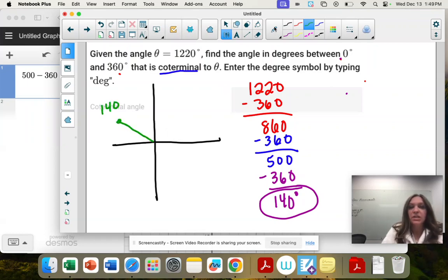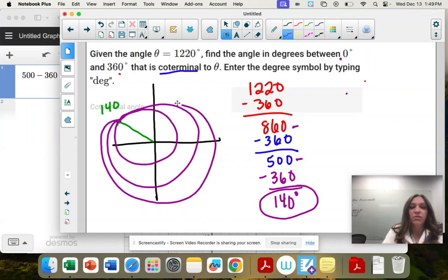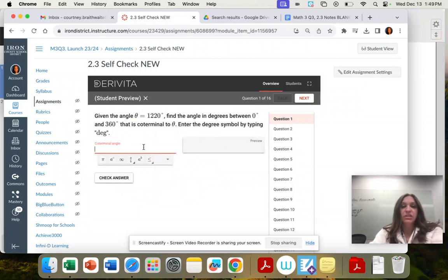And what happens is this angle just wraps around. So 140, if I go around 360, then I'm up to 500. Then I go another round 360, now I'm up to 860. And I go another round 360, and I'm at 1220. So they're actually the same angle, just winding around the 360 degrees.